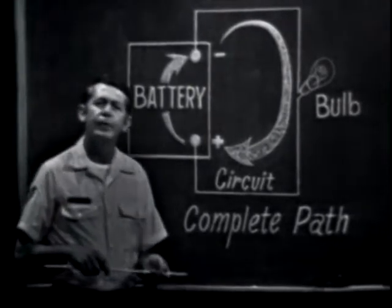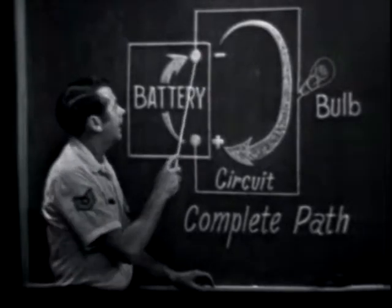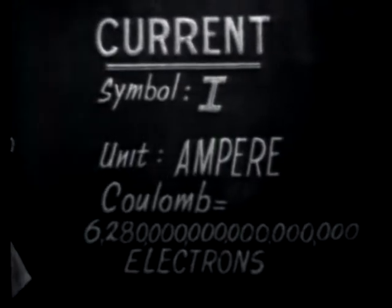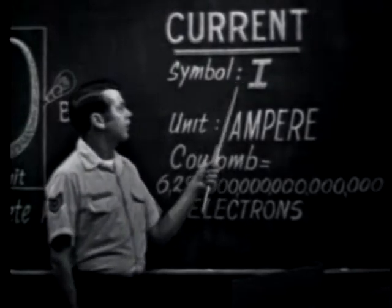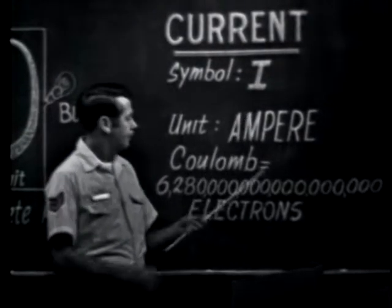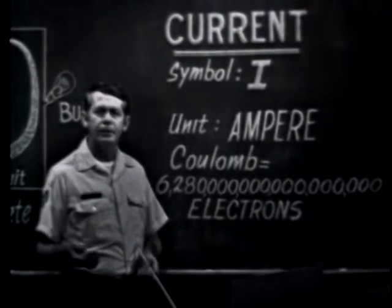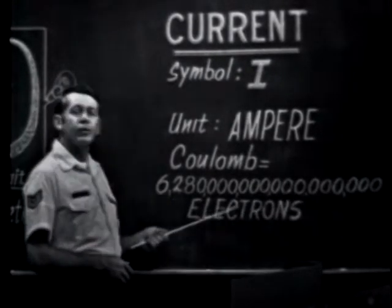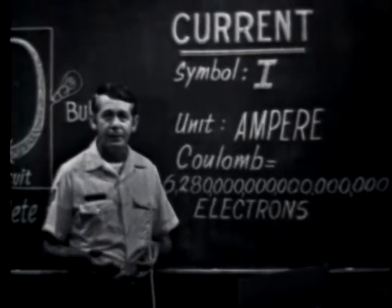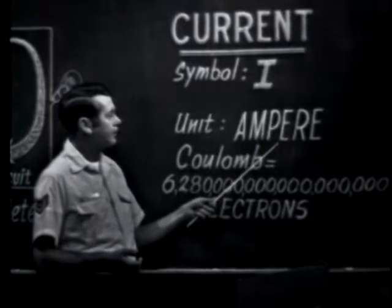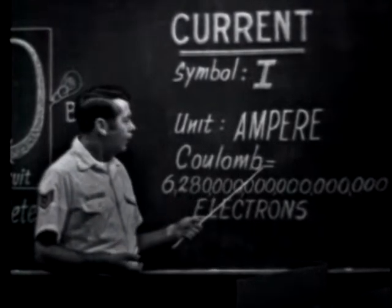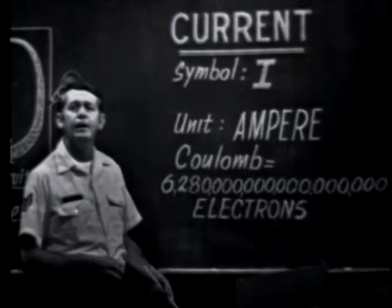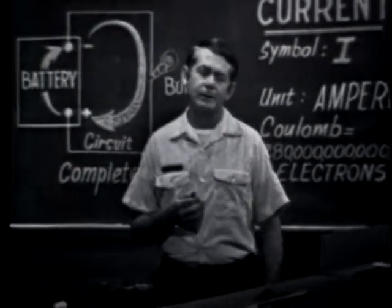You should also remember that the requirements for current are a source of voltage and a continuous path through which current can flow. Here are some terms associated with current that you should become familiar with. The symbol for current is the capital letter I. A coulomb is a measure of the amount of current — one coulomb is a specific number of electrons. Trying to count this many electrons would be like trying to count the grains of sand on a beach, so we'll rely on meters to measure current in amperes.